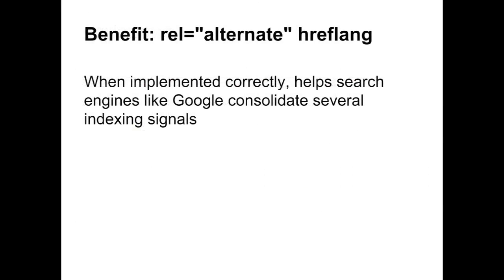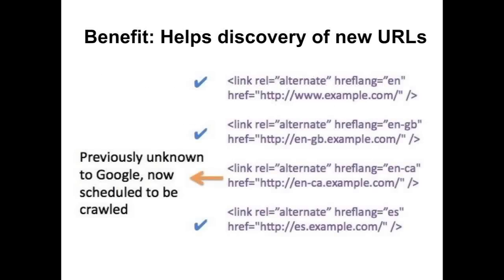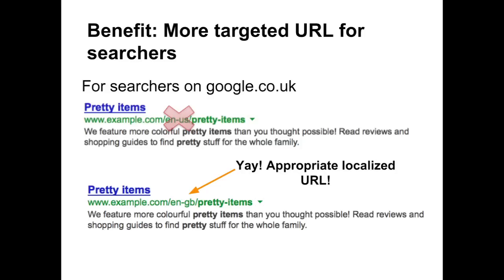Now that you understand the configuration of rel alternate hreflang, let's review the benefits. When implemented correctly, rel alternate hreflang helps search engines like Google understand the relationship between pages on your site, so we can more accurately crawl and index them. It also helps search engines discover new URLs as you expand your site — if we're only aware of three of four alternates, we'll schedule the fourth URL to be crawled, after which it can be indexed and available in search results. Finally, by using this signal, we can serve searchers a more targeted URL in their results.